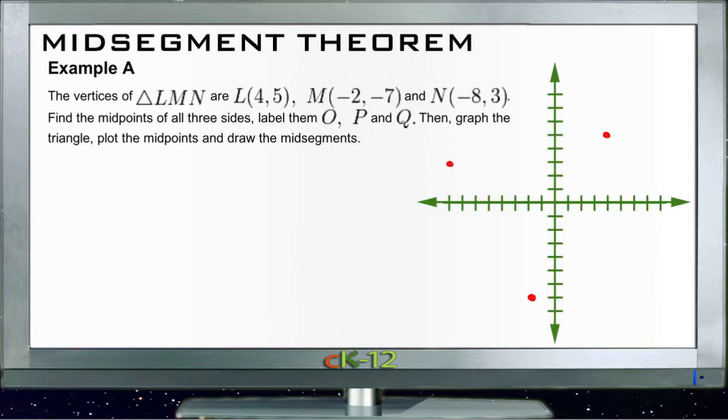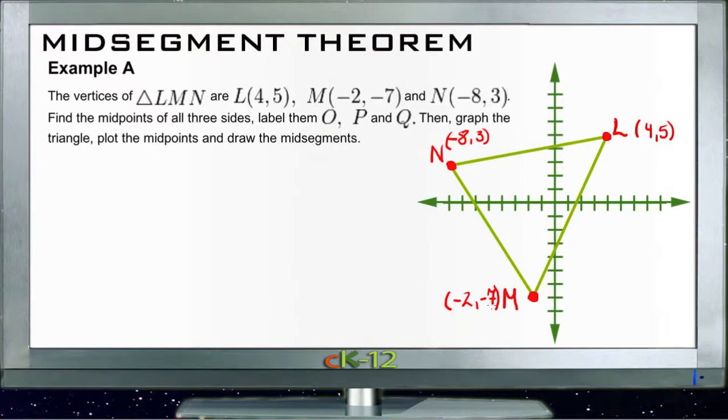So if we connect those lines, there we go, then we get a triangle. It says graph the triangle, plot the midpoints, and draw the midsegments. So here we have our triangle graphed, and I went ahead and marked the three points. We need to find the midpoint of each of these lines.